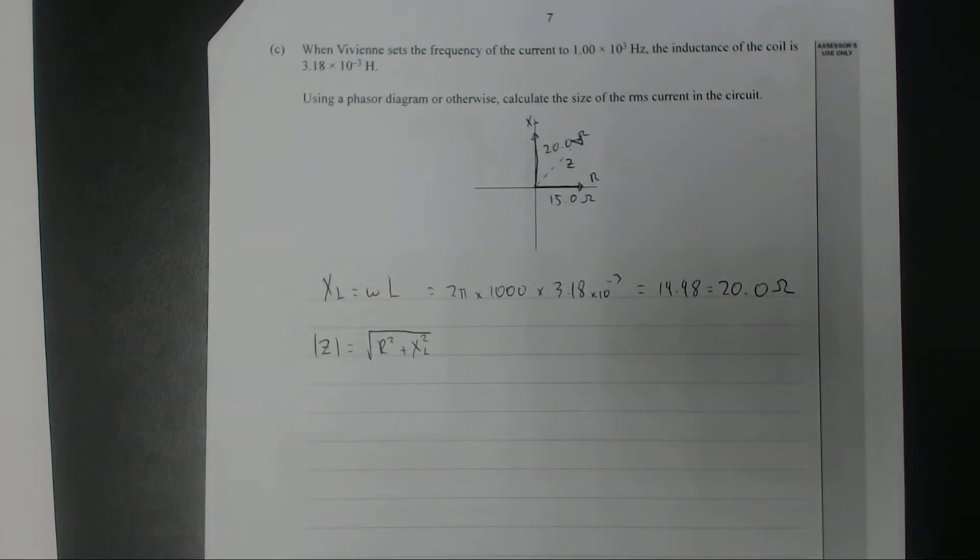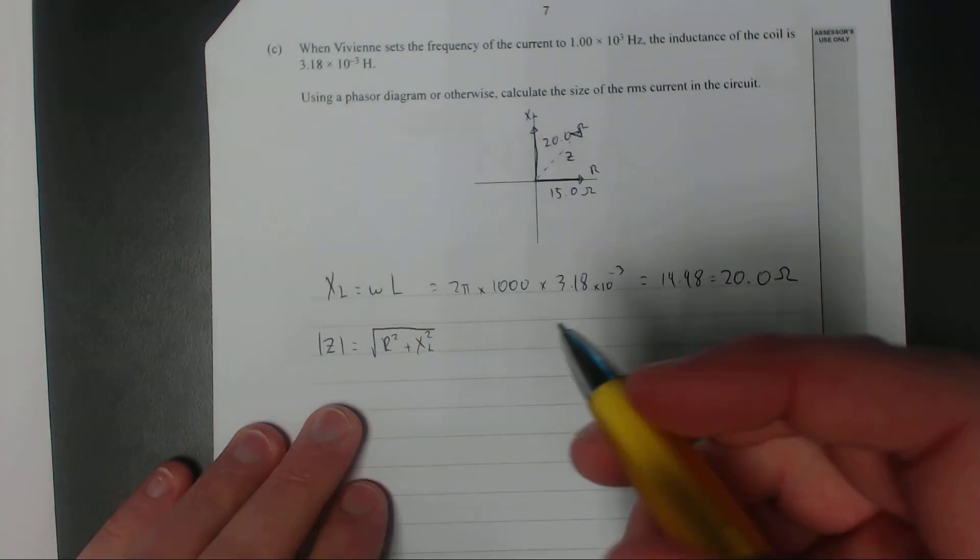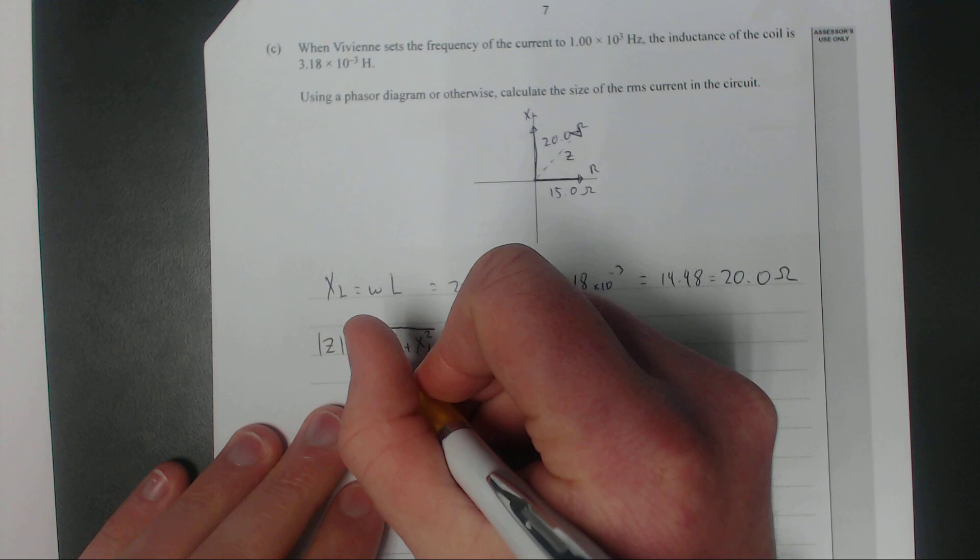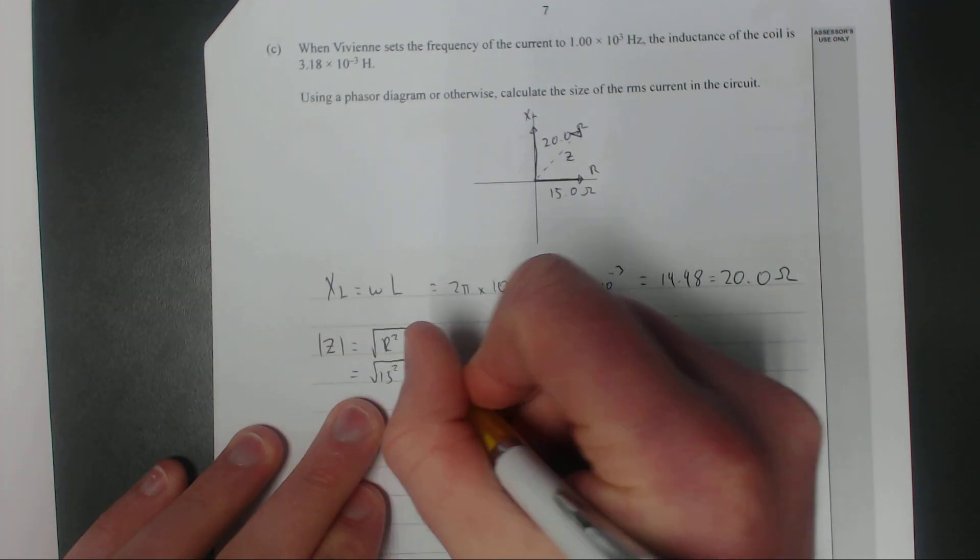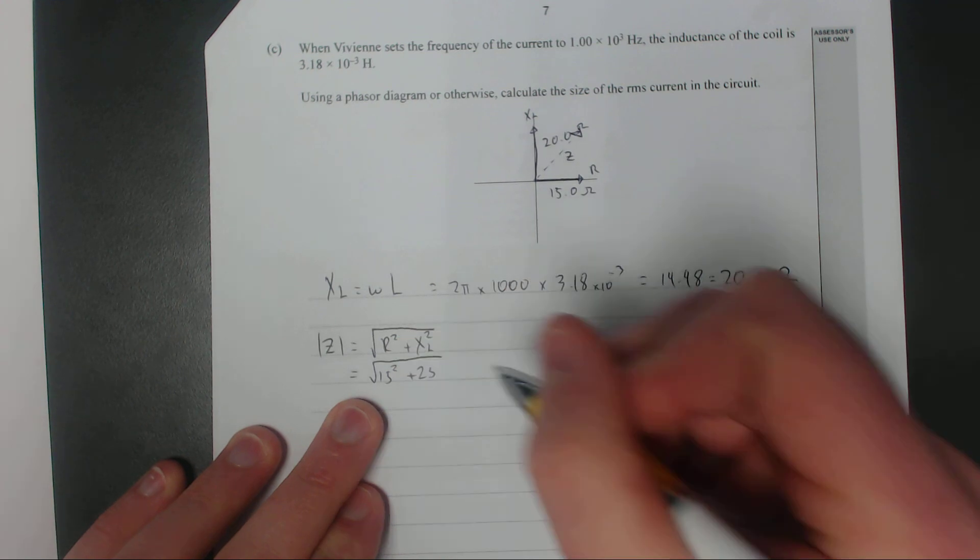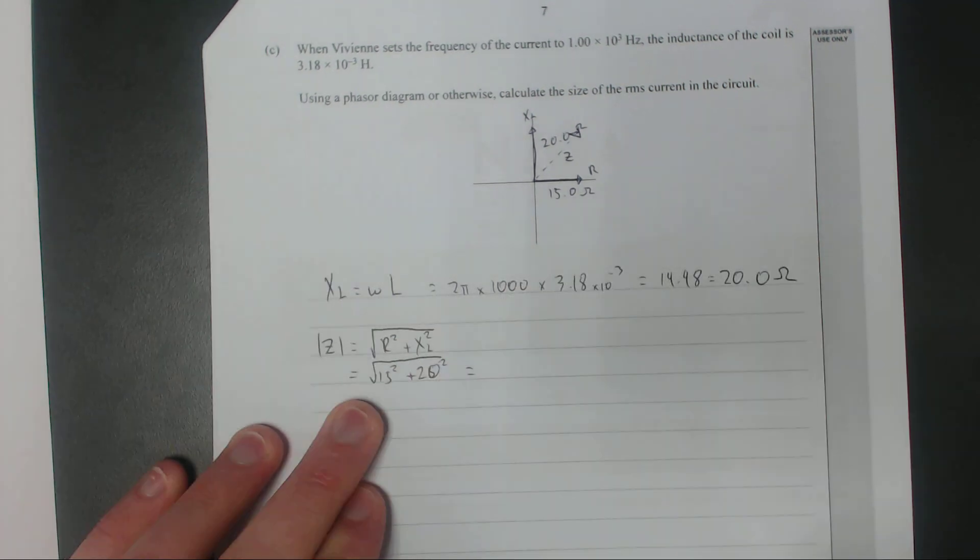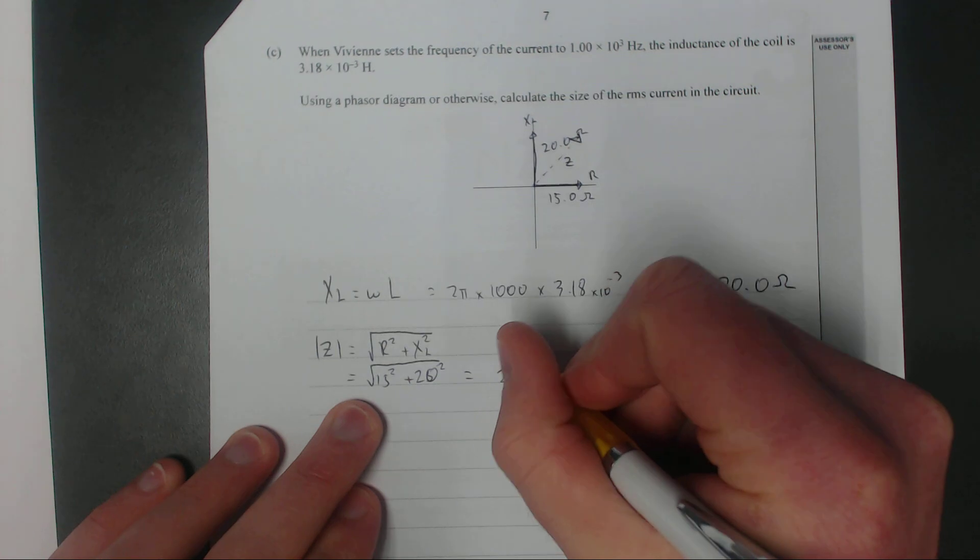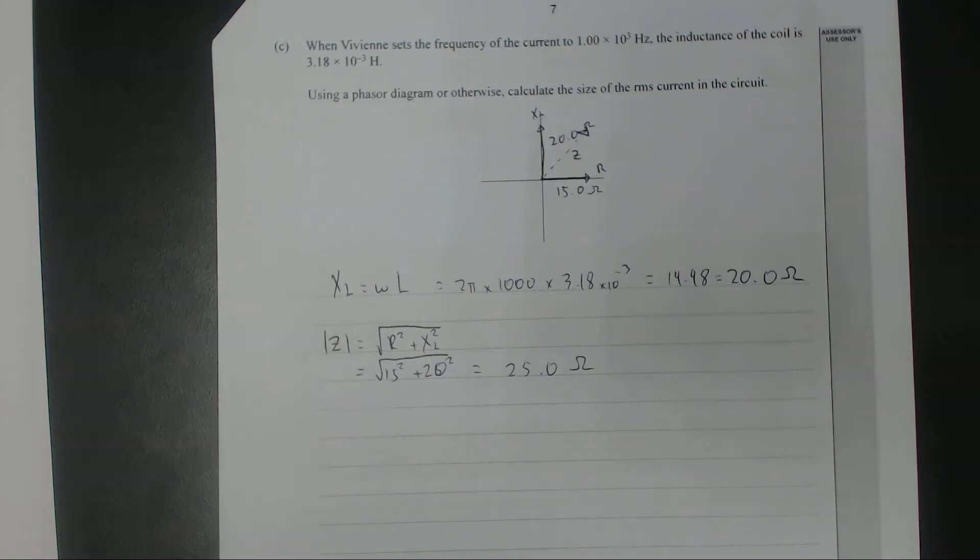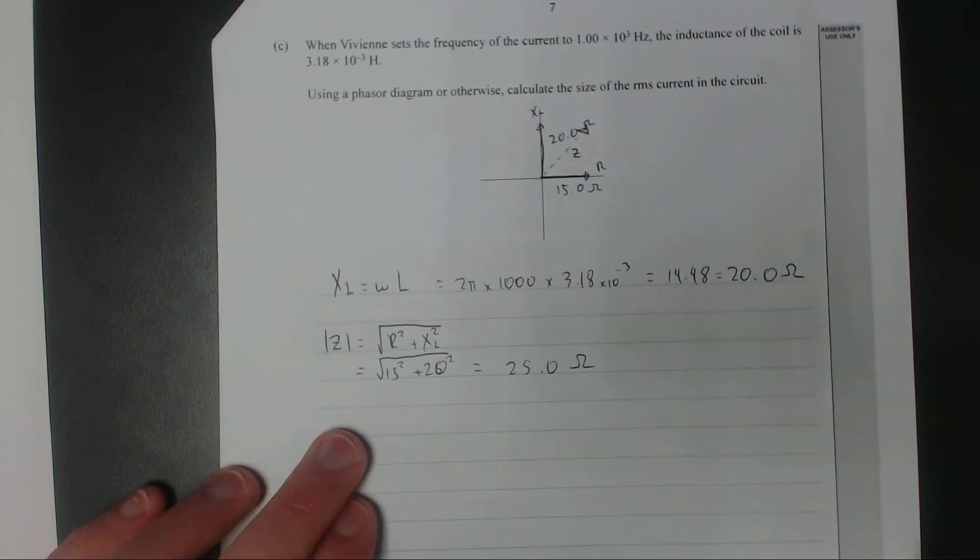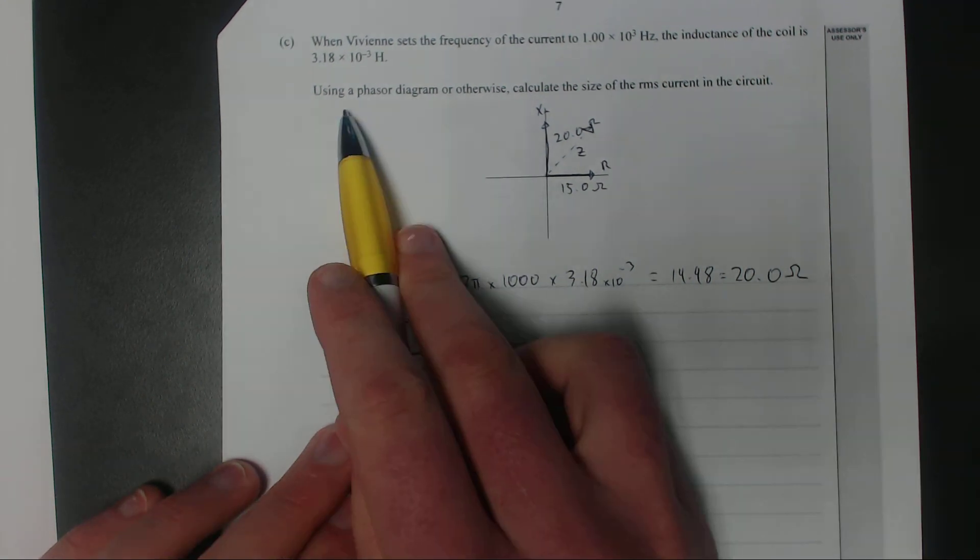If you plug this in, that should give you square root of 15 squared plus 20 squared, which equals 25.0 ohms. So that is the impedance.